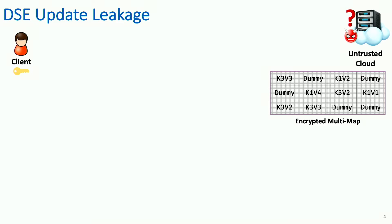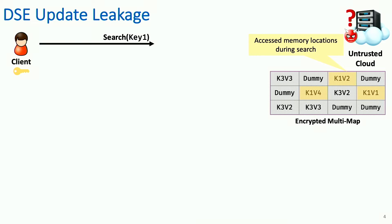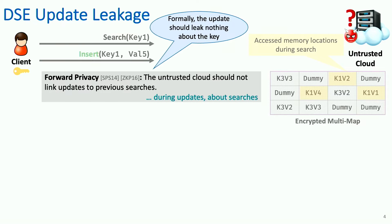Starting with the multi-map from the previous slide, if the client wants to search for one key, the server has to, in any case, access the necessary memory locations to give back the result. Now, if the client wants to insert another key-value pair for the same key, we don't want the server to be able to link this update and the previous search. More formally, we want the update to leak nothing about the key being updated. This pertains to searches that haven't happened before — this is called forward privacy.